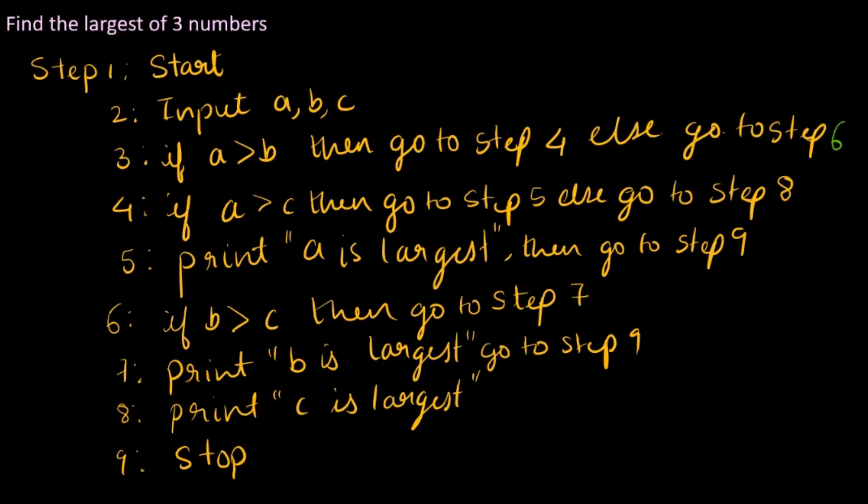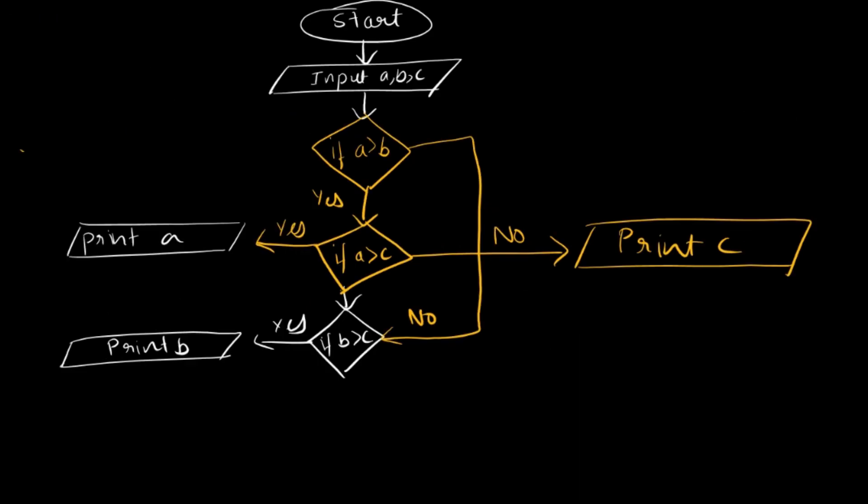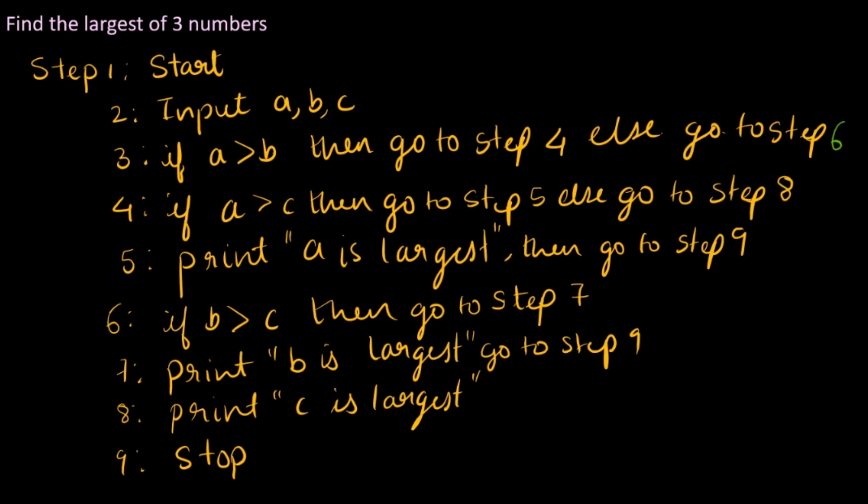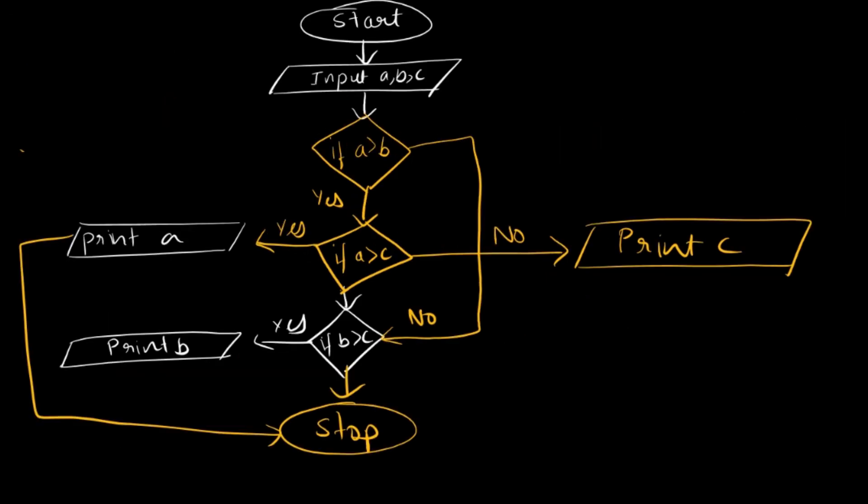And then after that, print A is greater than go to step 9, basically to stop it. So we can end it here, stop. And then put down the arrows. This is the most efficient way that we can solve it. Then here also go to step 9. This is the flowchart and the algorithm.